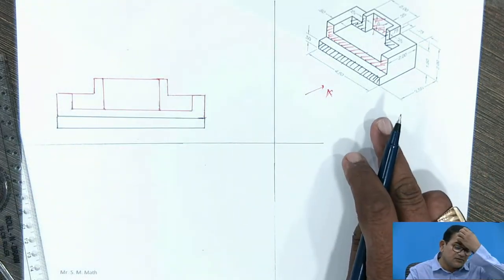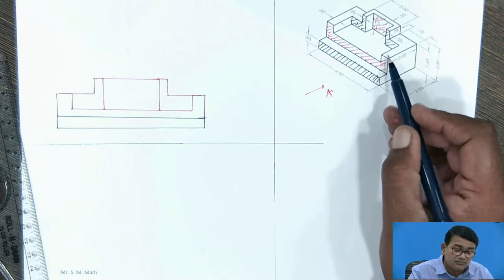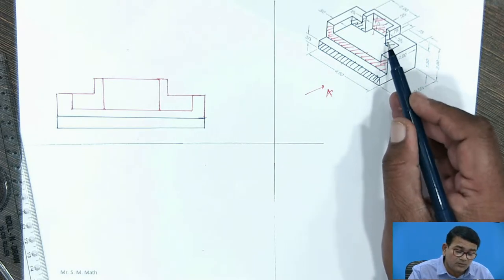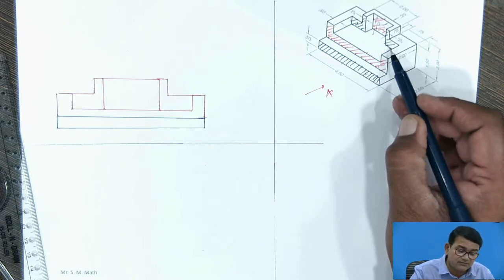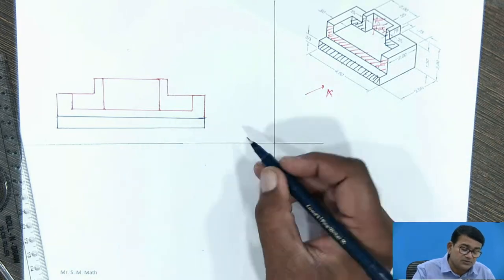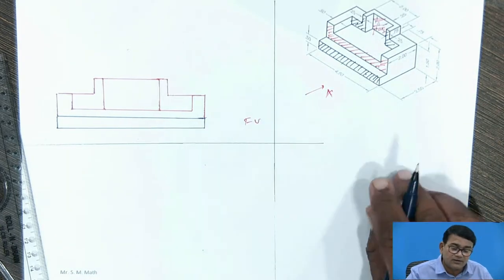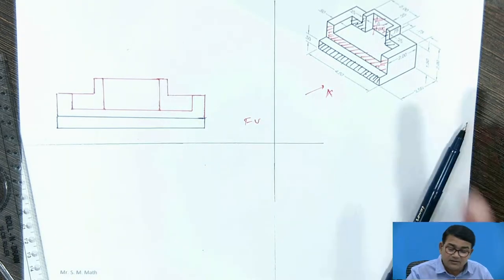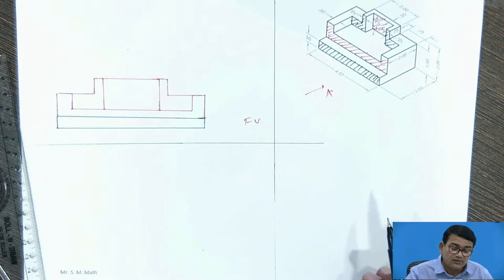So this is the front view. Some more complicated lines are there — this surface, this surface, then this surface, then this surface, then the front view. Now you have to go for the top view.